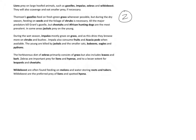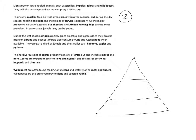For question number two, it asks you to use the same organisms and make an energy pyramid. An energy pyramid has multiple levels, and the bottom level shows where the most energy is — this level is our producers. The producers are going to be all of the different plants: grasses, seeds, shrubs, fruits, pods, leaves, melons, roots, and tubers. In all, there are nine different plants or producers that go into the first level of the energy pyramid.